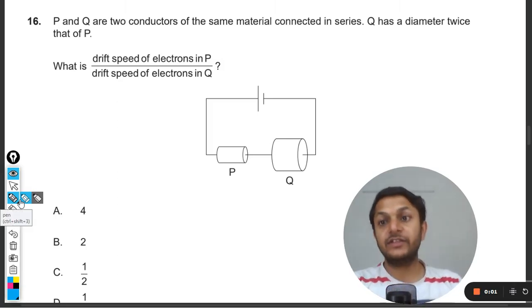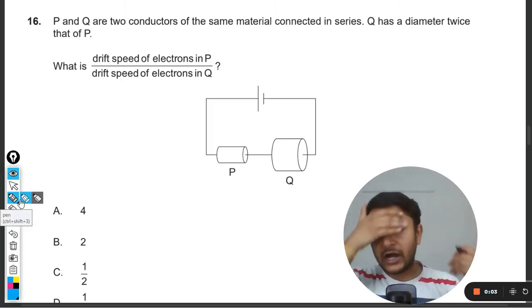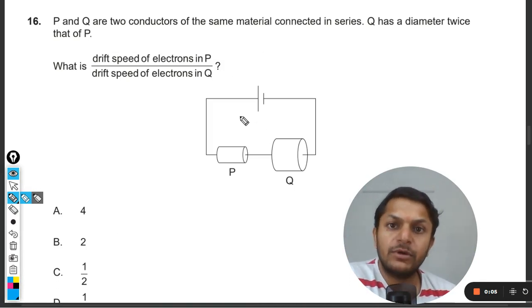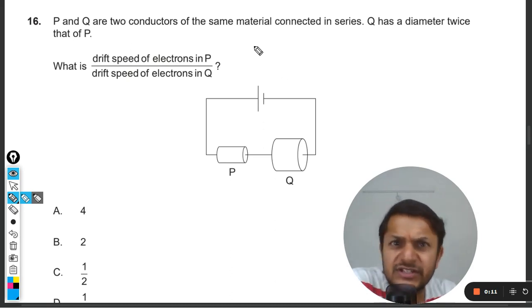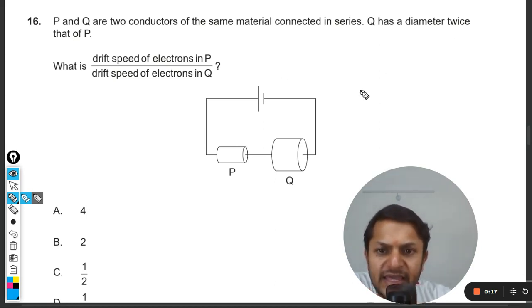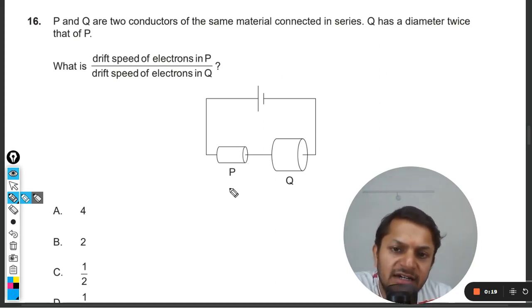Okay dear students, let us see what is there in this question. P and Q are two conductors of same material connected in series, so they have the same material, which means they will be having the same resistivity, conductivity, and all that. Q has a diameter twice that of P, so we can say that here the diameter is d and the diameter for Q will be 2d.